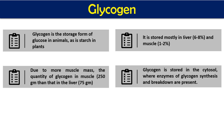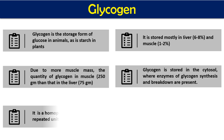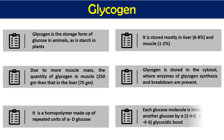Glycogen is stored in the cytoplasm; its synthesis and degradation both occur in the cytoplasm, meaning all enzymes required for synthesis and degradation are present in the cytoplasmic fraction of the cell. It is a homopolysaccharide composed of alpha-D-glucose and is a branched molecule, having two types of bonds: alpha-1,4 bonds in the straight chain and alpha-1,6 glycosidic bonds at branching points.